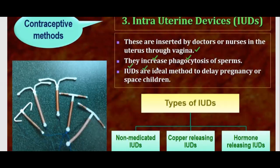IUDs are the ideal method to delay pregnancy or to space children. If a child is born, IUDs can be used for 5 years to space the gap between children and allow for proper nutritional health. So these are intrauterine devices.